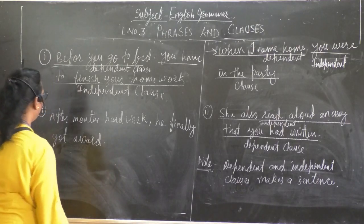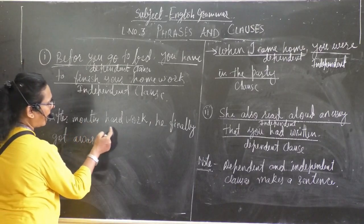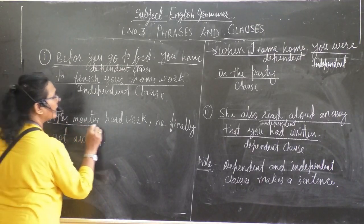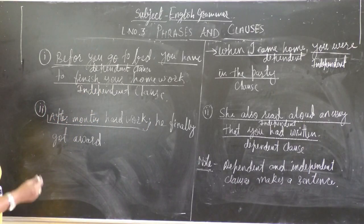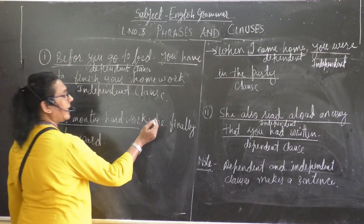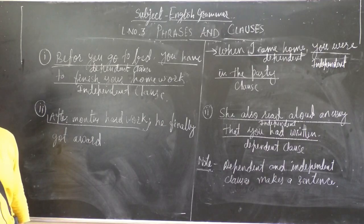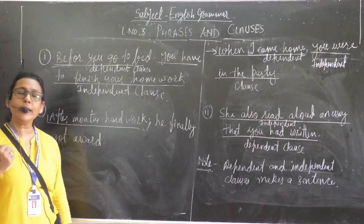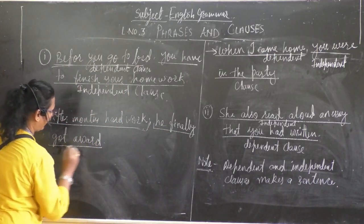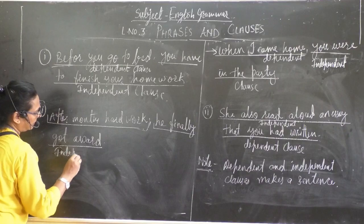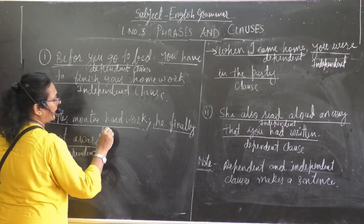Now the third example: 'After months of hard work' — if you say this alone, you are not getting any meaning. But if you say 'we finally got a reward' — that gives complete meaning, so that is the independent clause. And 'after months of hard work' is the dependent clause.